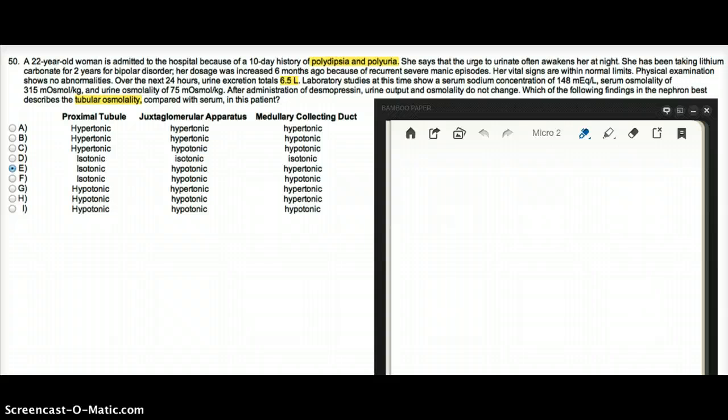Urine excretion totals 6.5 liters. Lab studies at this time show a serum sodium concentration of 148 milliequivalents per liter, serum osmolarity of 315, and urine osmolarity of 75. After administration of desmopressin, urine output and osmolarity do not change.